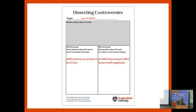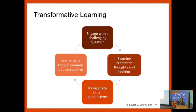They really liked doing it in this order. They really liked starting with the common ground — finding something they could actually agree on. This is part of the transformative learning model: engaging question, what do I think, examine your thoughts and feelings, what do other people maybe think about this — zoom out, chill out, it's fine, we can all talk about it.